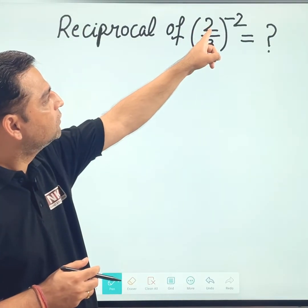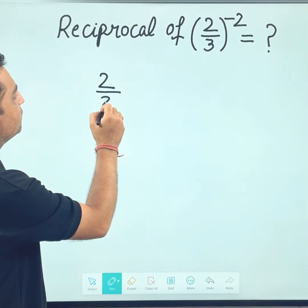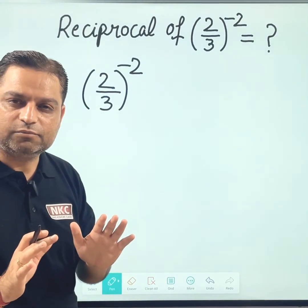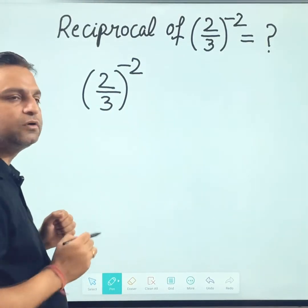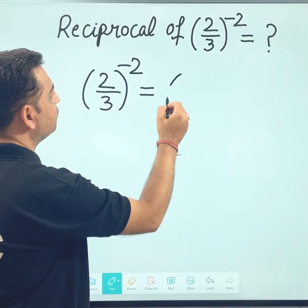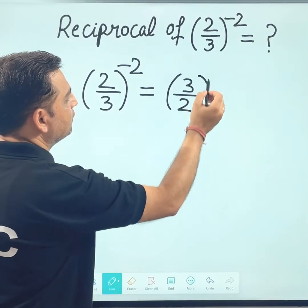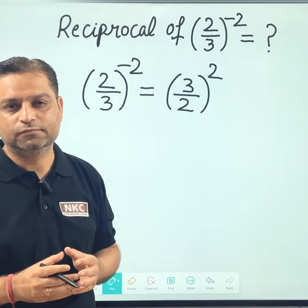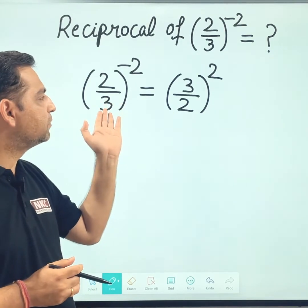First of all, this 2 over 3 to the power minus 2 — I am writing here 2 over 3 to the power minus 2. Without thinking that we are finding reciprocal, let me just simplify it first. We know that a negative exponent can be changed to positive. If you do reciprocal inside — like 2 over 3 — firstly you write it 3 over 2, then its exponent will become positive, it becomes plus 2. And do remember, we are not finding reciprocal as of now; I am just simplifying the given value.